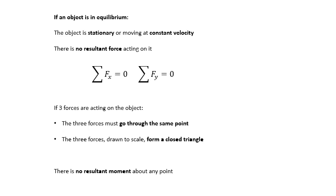So sigma FX. We know what FX is from the last video. So the sum of all the forces in the X direction is zero and the sum of all the forces in the Y direction is zero. Now, there's a couple of other interesting conditions as well. If there are three forces acting on the object, then they all have to go through the same point. And when you draw them to scale, they will form a closed triangle. Another condition for equilibrium, there is no resultant moment about any point as well, but we'll worry about that in another video.